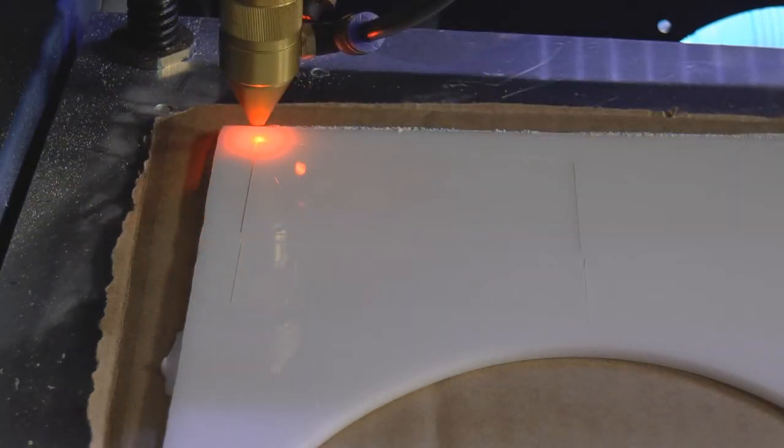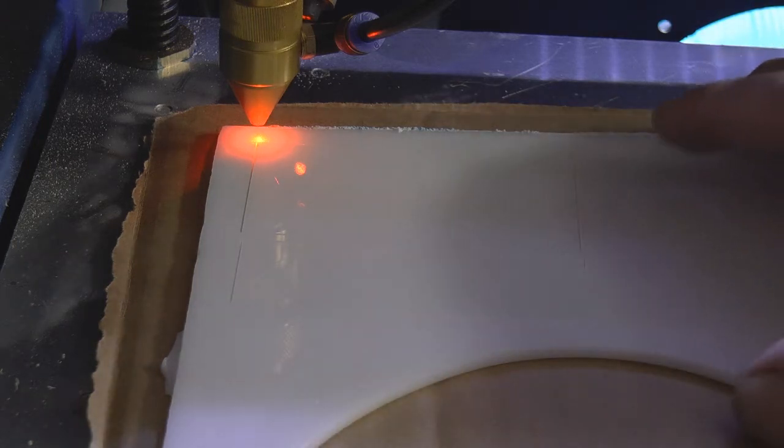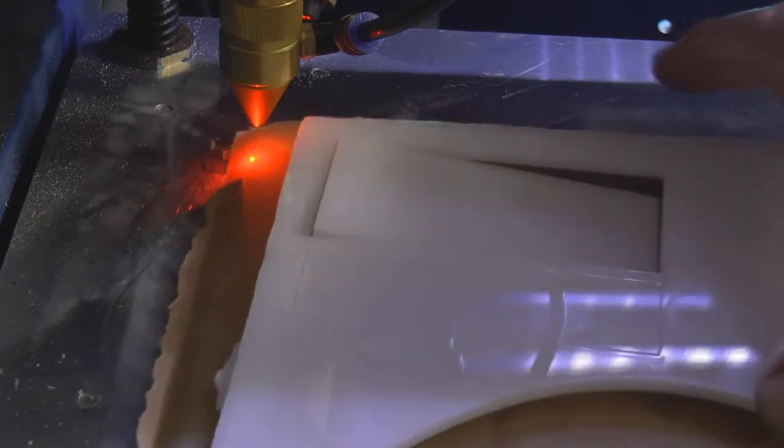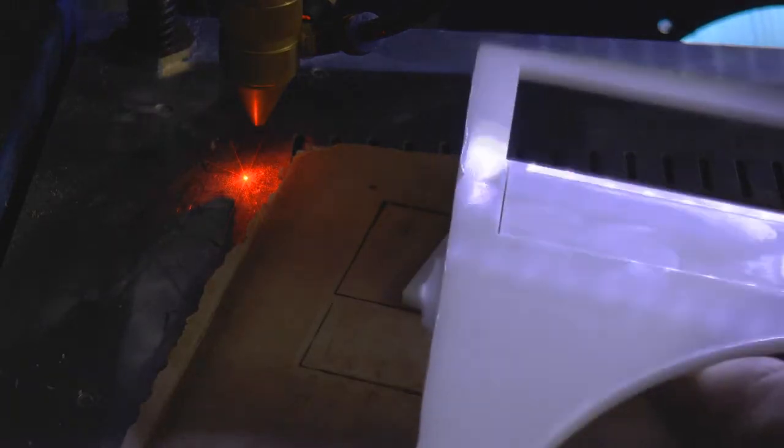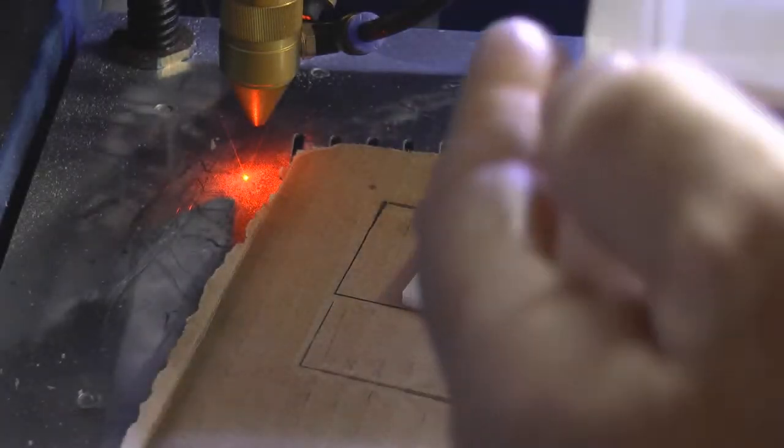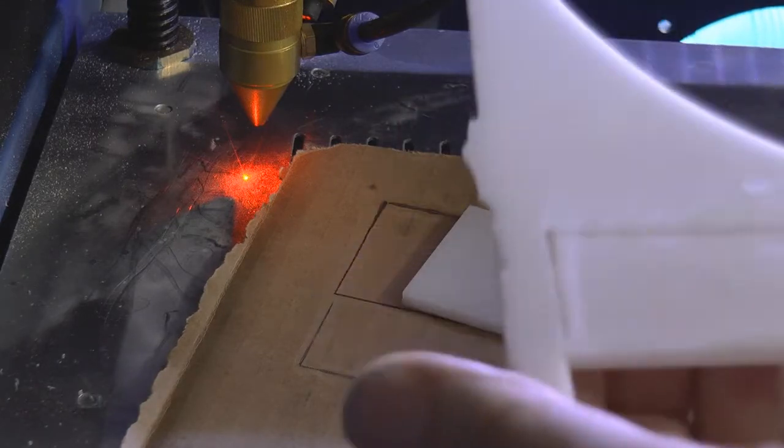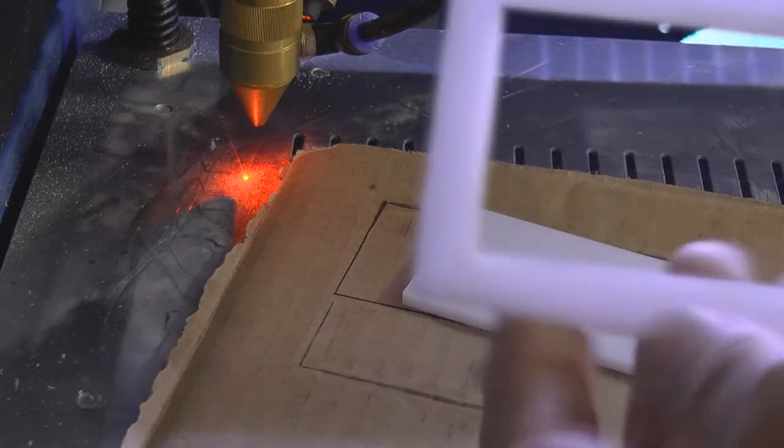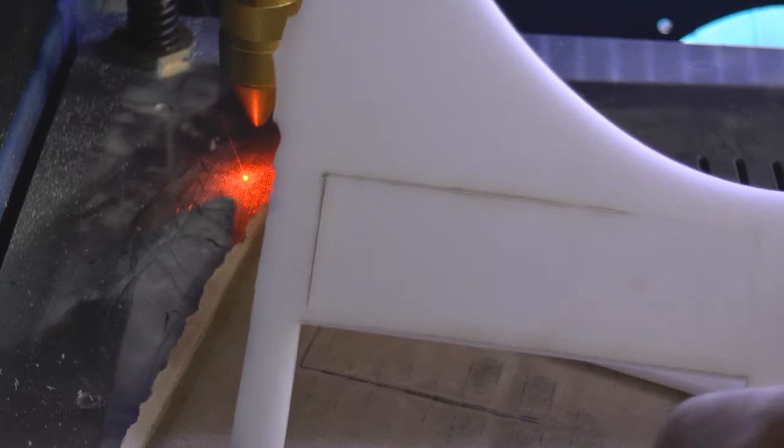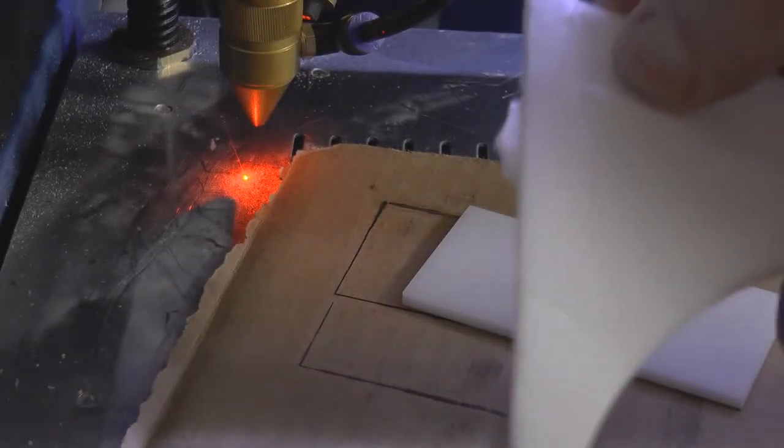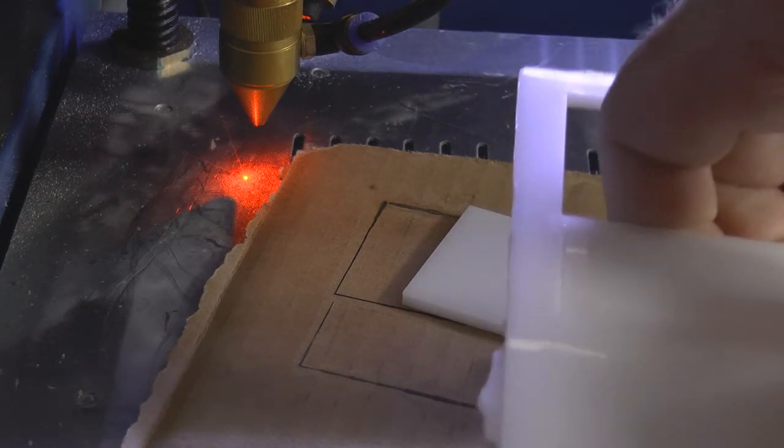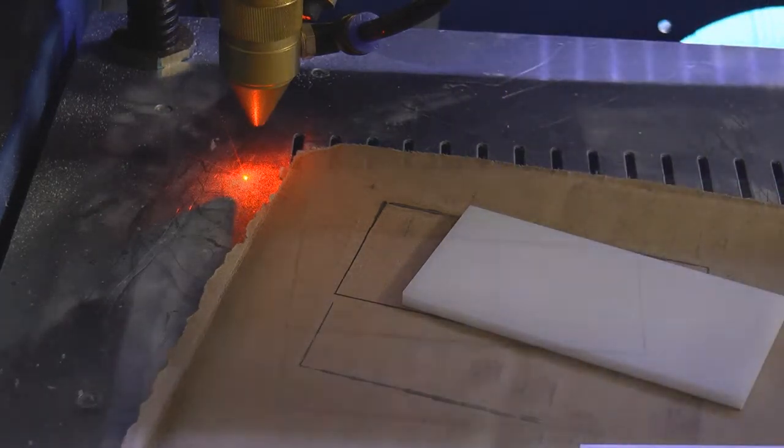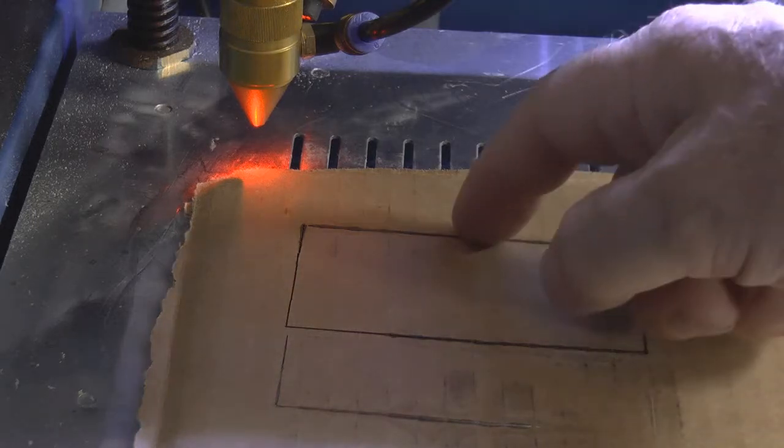Okay there's our two test pieces and hopefully they should both fall out. The first one did, and would you believe it, part way through the second one it has actually stopped cutting properly. So there's a good example of the problem that we're trying to identify. Is it time related?